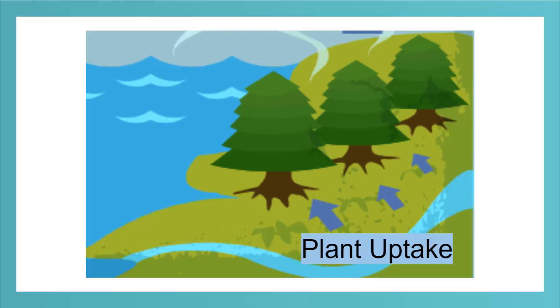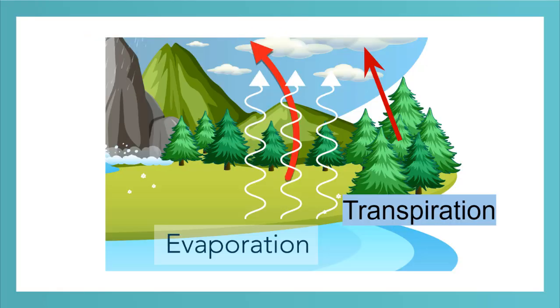Plants can suck water up into them from the soil. This movement of water from the soil to the plant is called plant uptake. After plant uptake, water can also be turned into water vapor and is lifted to the atmosphere from plants. This is called transpiration.